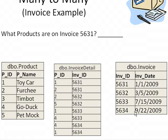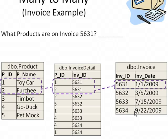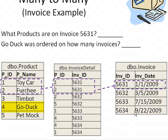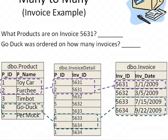Here's our bridge table. What products were ordered by invoice number 5631? If we look at 5631, we see it is listed twice, because this person ordered a toy car and a Furchie. How about the product GoDuck — how many times has that been ordered? GoDuck is listed on invoice 5633 and 5634. Therefore, there were two invoices: one on July 15th and one on September 22nd.